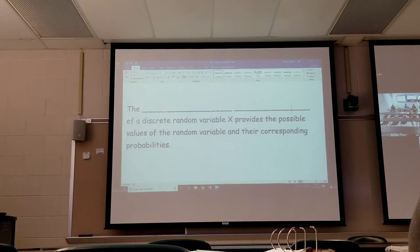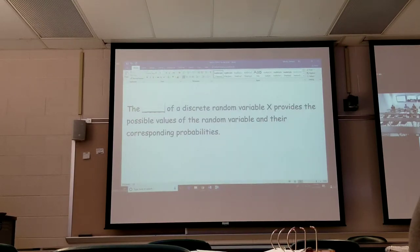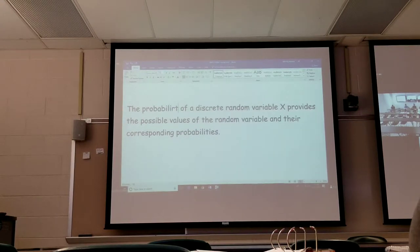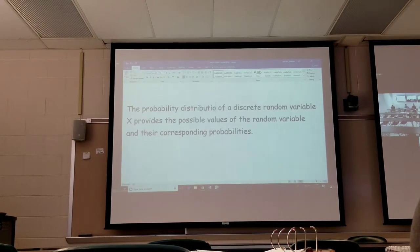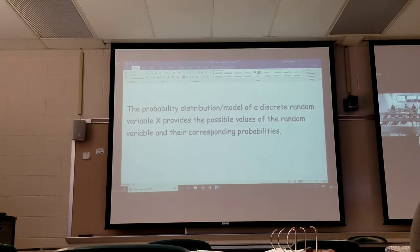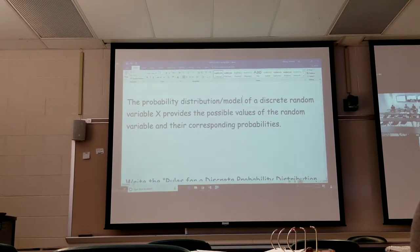The probability distribution of a discrete random variable X provides the possible values of the random variable and their corresponding probabilities. It's like a relative frequency table. It's a relative frequency distribution table, and we did those in chapter two.